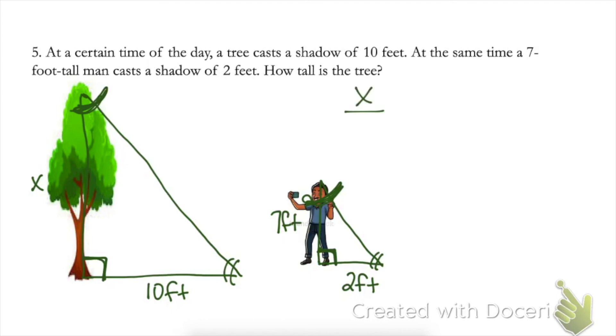I'm going to start with my unknown on the top. And that's from the tree triangle over there. The side that corresponds to that X would be the seven foot part of the man's triangle. Likewise, back to the tree triangle, we have 10 foot for the shadow, and the corresponding part would be the shadow for the man, which is two feet. Now we're going to cross multiply and solve for the height of the tree. Make sure that you label your units.